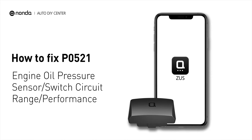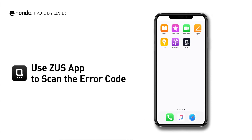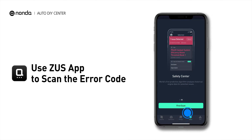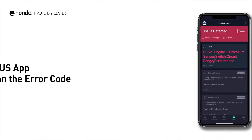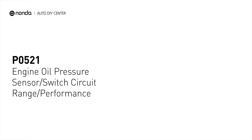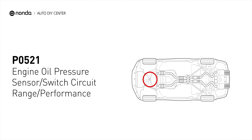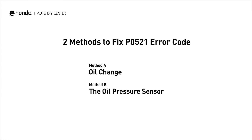If you are getting a P0521 error code, this video is going to show you two practical solutions to fix the error code at home. Use the Zeus app to scan your vehicle and see the error code P0521. It indicates an anomaly in the engine oil pressure readings registered by the PCM. Here are two simple DIY methods you can try to solve this problem.